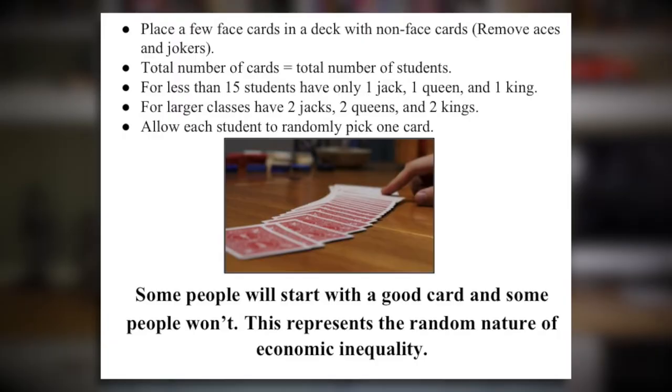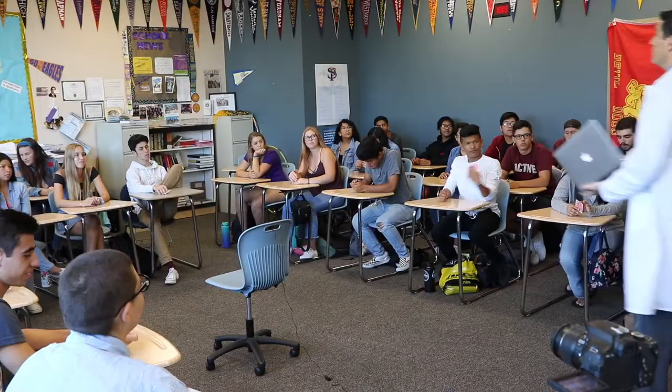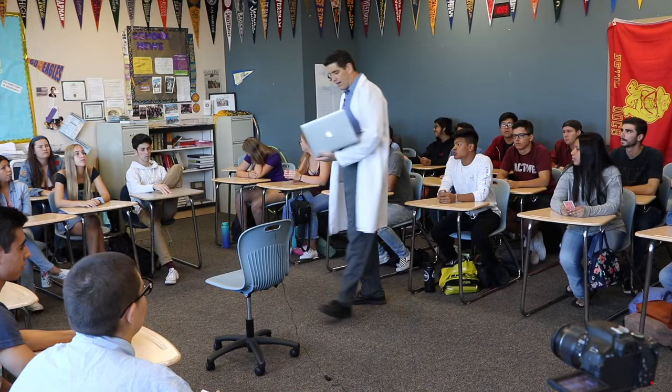Depending on the number of students, you add in some face cards. If you have fewer than 15 students, add one king, one jack, and one queen. If you have around 30 students, add two kings, two queens, and two jacks. It's important for students to randomly pick — walk around the classroom and have each student pick a card at random, then start running the activity.